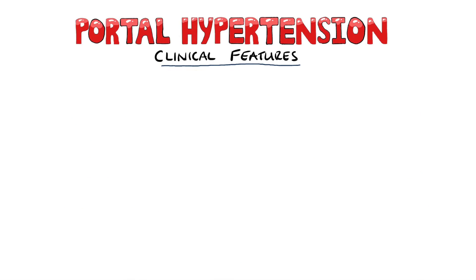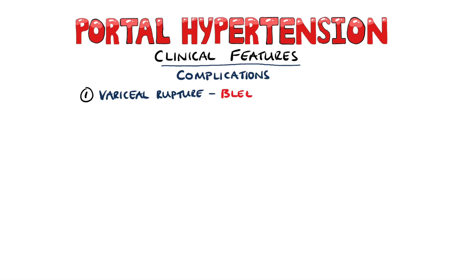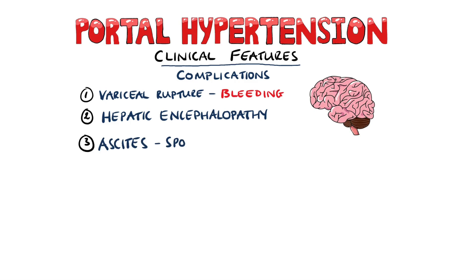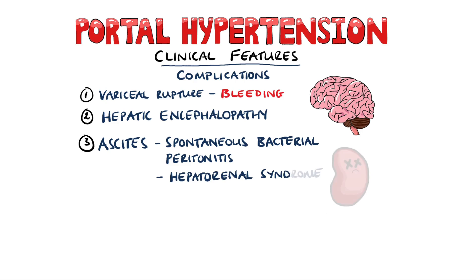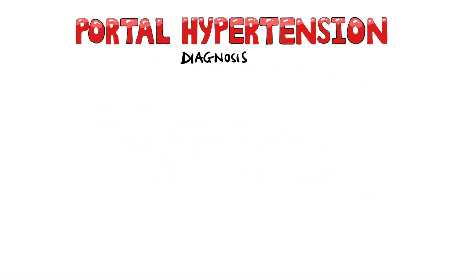Patients can also present directly with complications, either of portal hypertension such as rupture of the varices. Oesophageal varices, formed from build-up of blood from the gastric vein, are the ones that bleed most commonly. From decreased liver function we can have hepatic encephalopathy, and the complications of ascites include conditions like spontaneous bacterial peritonitis and hepatorenal syndrome.